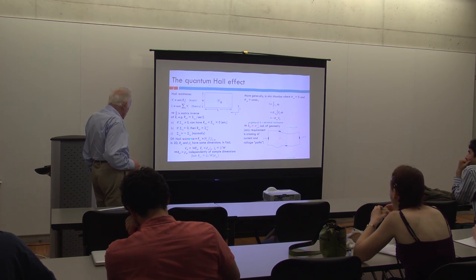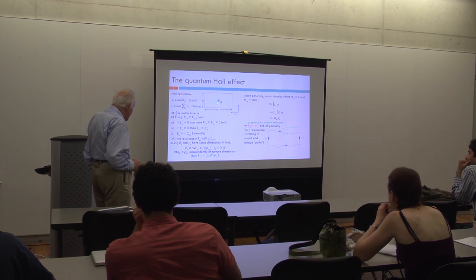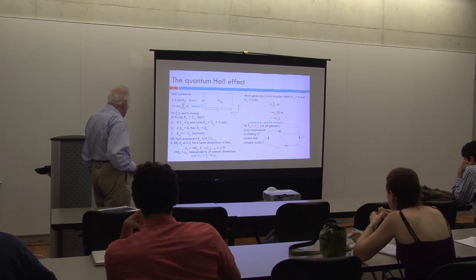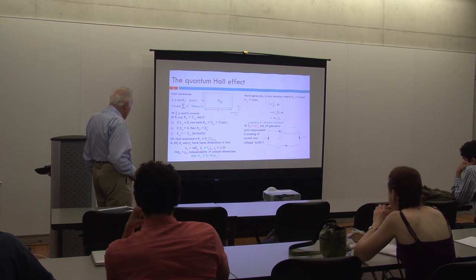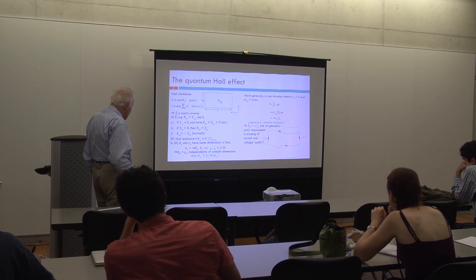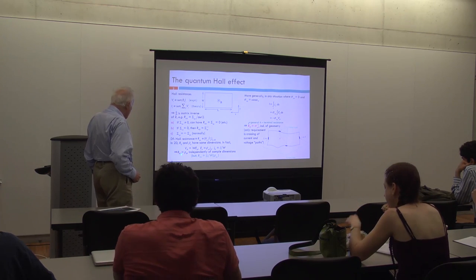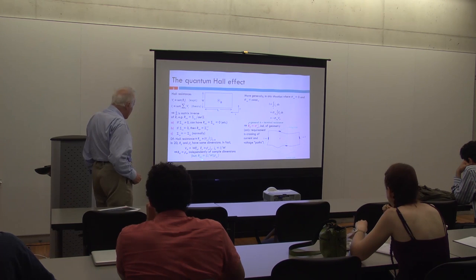We define explicitly the Hall resistance R_yx, which is the ratio of the voltage across the Y faces to the current along the X direction, given that the current in the transverse direction is zero. In two dimensions, the resistance, conductance, and resistivity have the same dimension. The Hall resistance is equal to the Hall resistivity in two dimensions independently of the sample dimension — though you can't make the same statement for the longitudinal resistivities, where there's a factor of L over W.